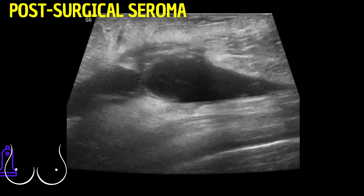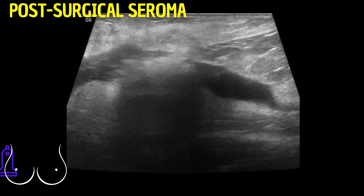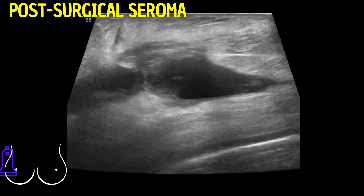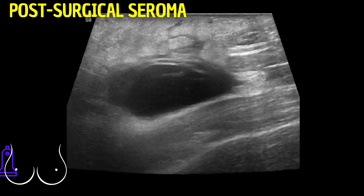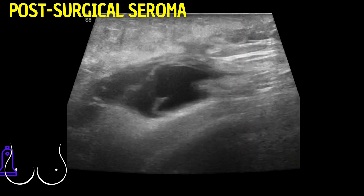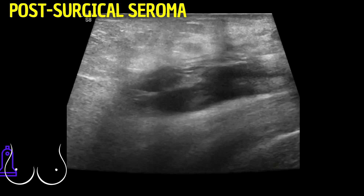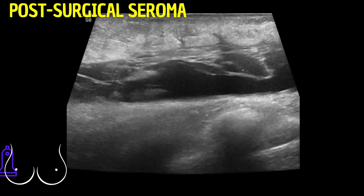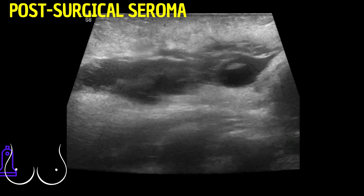The appearance of septations and slightly thickened walls in a seroma, while not altering its basic definition, indicates increased complexity, potentially leading to its classification as a complex or organized seroma in clinical practice.